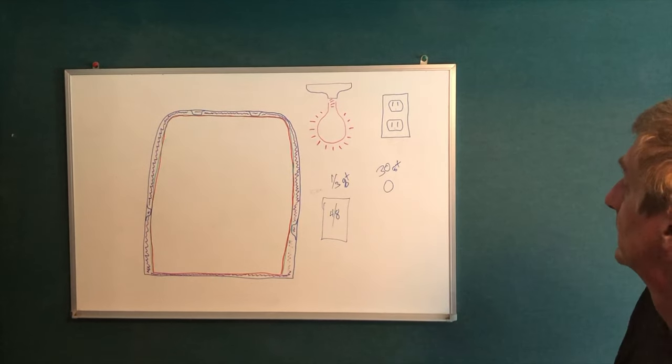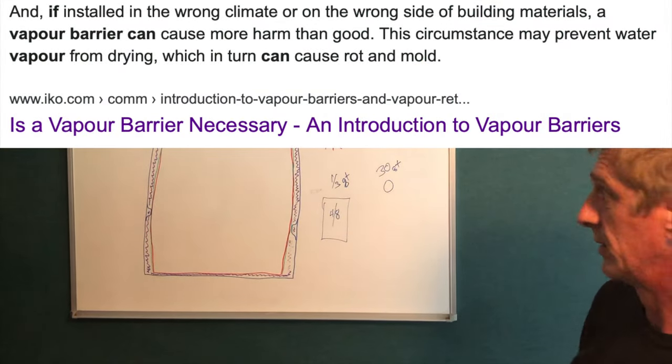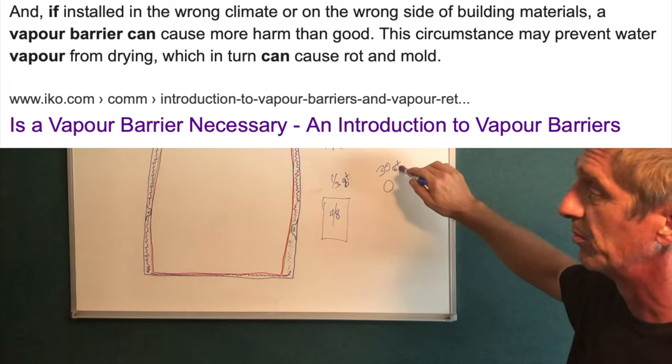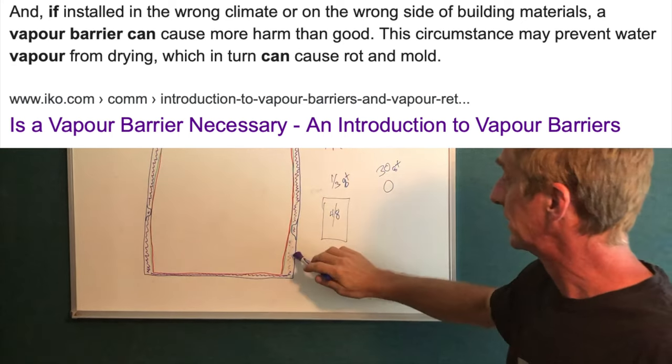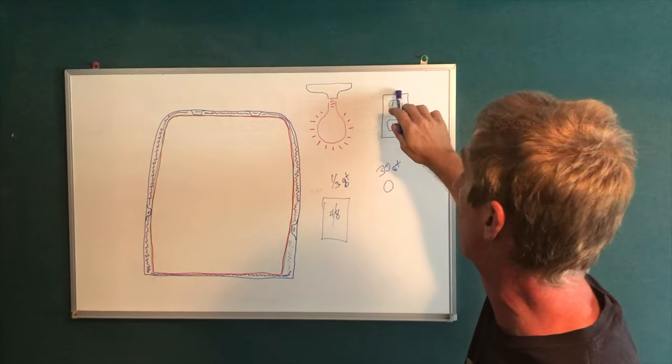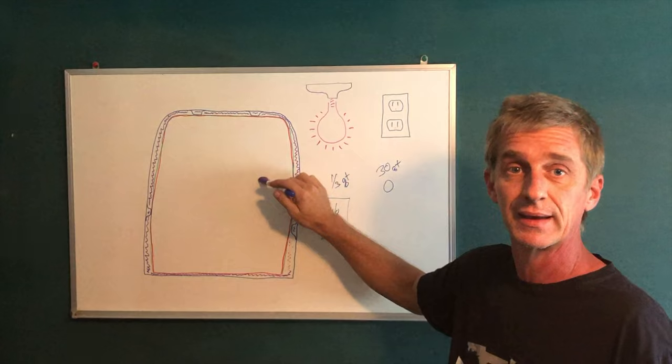Now here's the bad side of vapor barrier. Any of this water condensation moisture, whatever gets inside your wall through those leaks around your light fixtures and your power outlets, it cannot get back out.